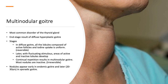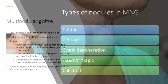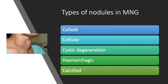Nodules appear at early ages in endemic goiter and later — around 20 to 30 years — in sporadic goiter. A multinodular goiter can have different types of nodules: colloid or cellular, cystic degeneration, or hemorrhagic nodules due to bleeding into a nodule. Bleeding into a nodule presents with rapid enlargement over 24 to 48 hours. Long-standing nodules can also become calcified.